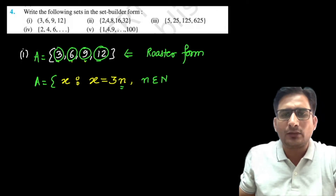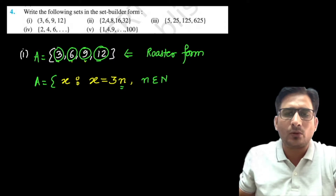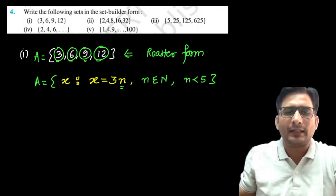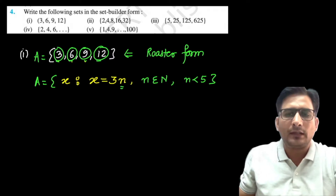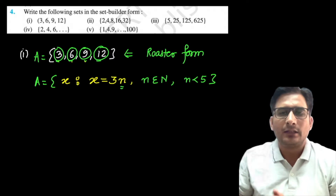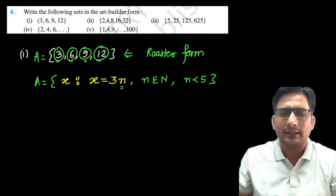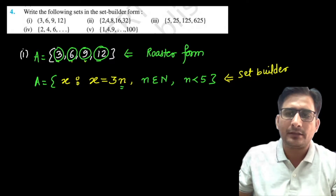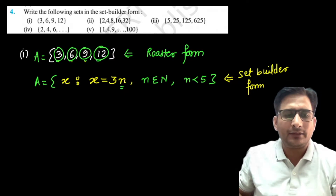Since n belongs to natural numbers, it would keep going, so we need a condition to stop it. We write n < 5, or equivalently n ≤ 4. This stops the series at 12. So this form — {x ; x = 3n, n ∈ ℕ, n < 5} — is called the set builder form.